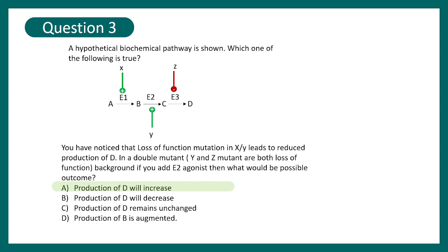But in a double mutant it's kind of like a neutral situation. But in this double mutant if you pharmacologically add an agonist for E2, then what happens? E2 activity increases so conversion from B to C really increases. Now Z is not present so E3 is working even in an augmented fashion. So the step from C to D would be even more. As an end result, production of D will increase.